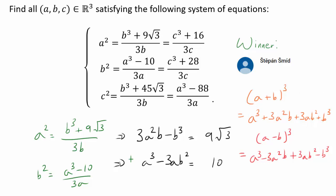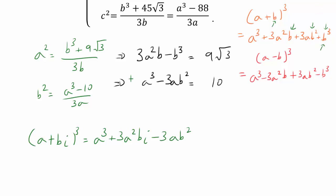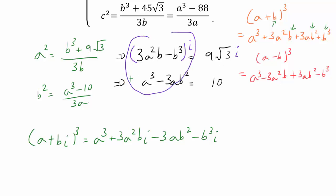Expanding (A+Bi)³ by substituting Bi for B, we get A³ plus 3A²(Bi) plus 3A(Bi)² plus (Bi)³, which gives A³ plus 3A²Bi minus 3AB² minus B³i. We have the reversal of sign we needed: plus 3A²B and minus 3AB². The trick: multiply both sides of the first equation by i, then add the two equations. The left-hand side becomes (A+Bi)³.